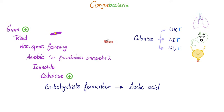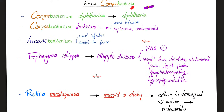They are catalase-positive carbohydrate fermenters. The famous Corynebacteria include Corynebacterium diphtheriae, which causes diphtheria; Corynebacterium jeikeium, which causes wound infection, septicemia, and endocarditis; and Corynebacterium cause wound infection and scarlet-like fever, not to be confused with scarlet fever caused by group A beta-hemolytic streptococci, also known as Streptococcus pyogenes.